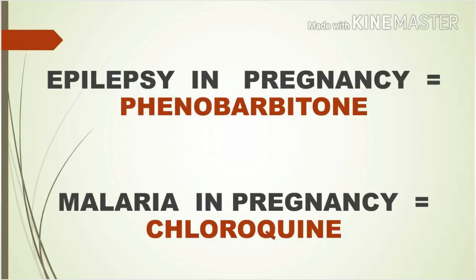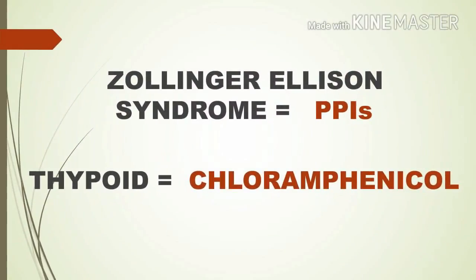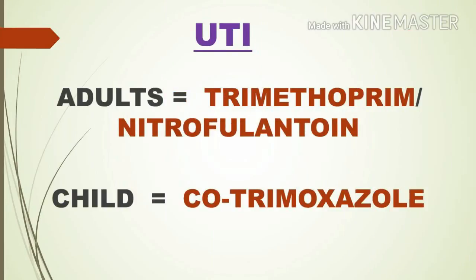Chloroquine is the drug of choice for malaria in pregnancy. Proton pump inhibitors like pantoprazole and omeprazole are the drug of choice in Zollinger-Ellison syndrome. The drug of choice in typhoid is chloramphenicol. In case of urinary tract infection, trimethoprim or nitrofurantoin is the drug of choice for adults, while cotrimoxazole is the drug of choice for children.